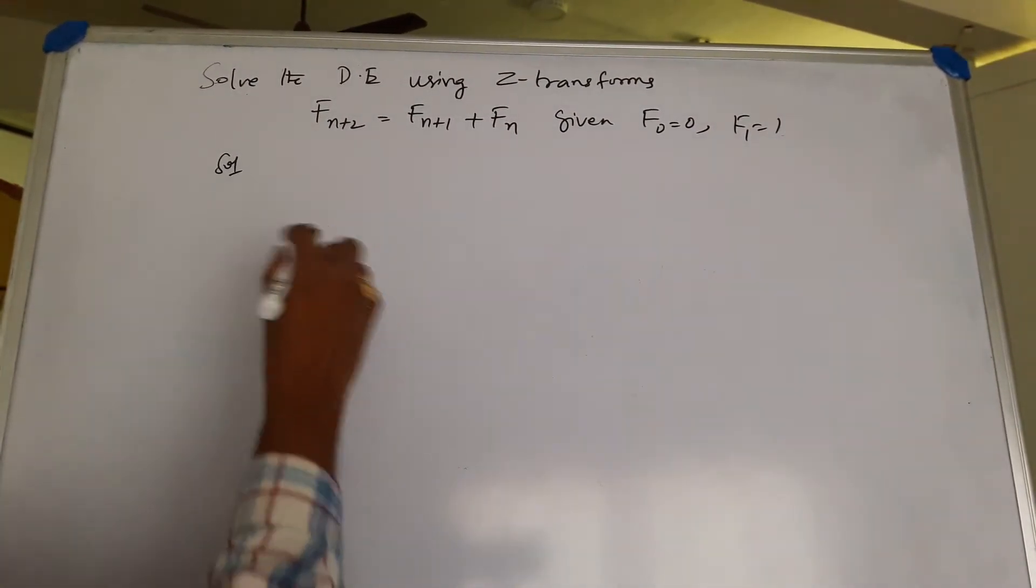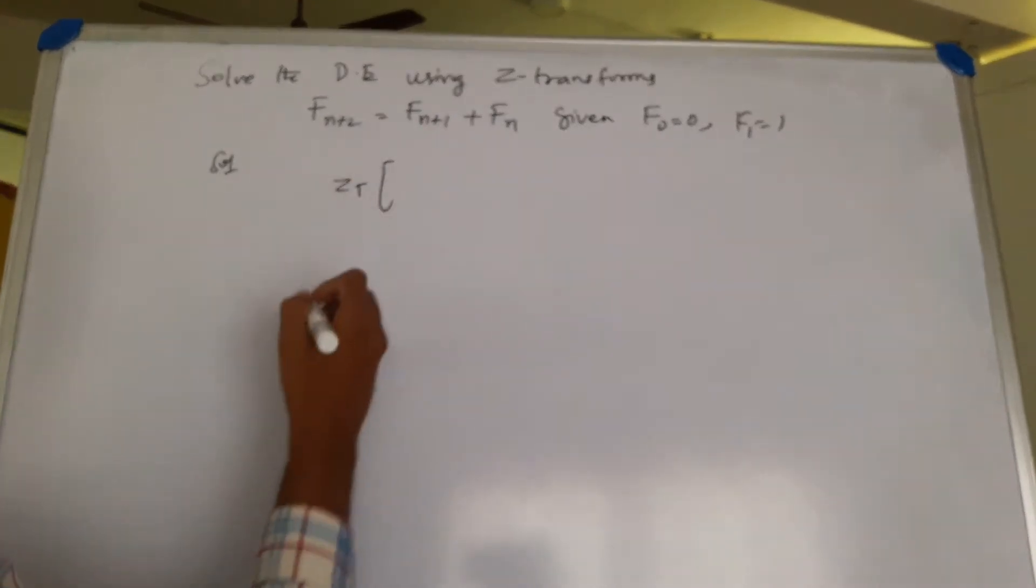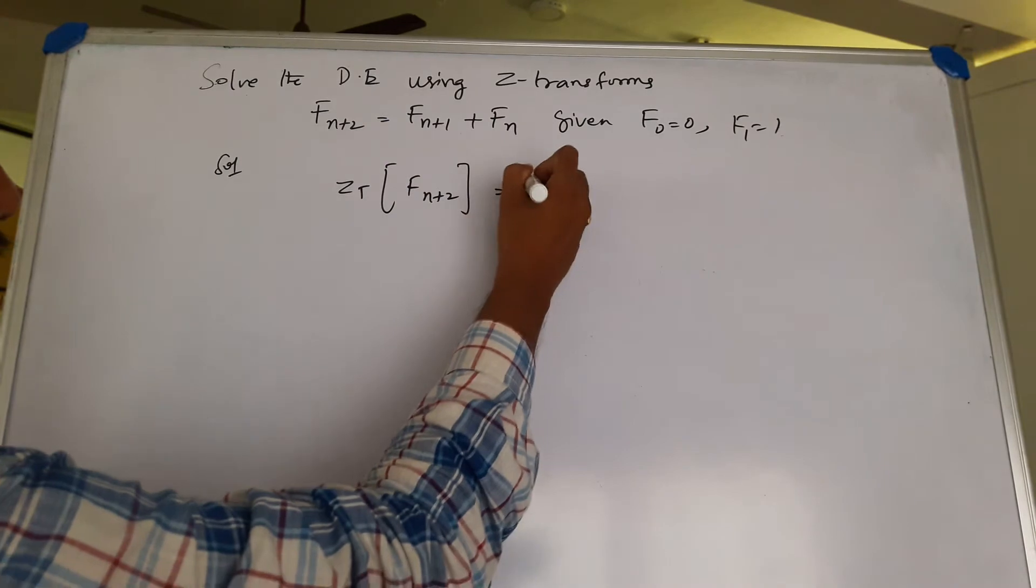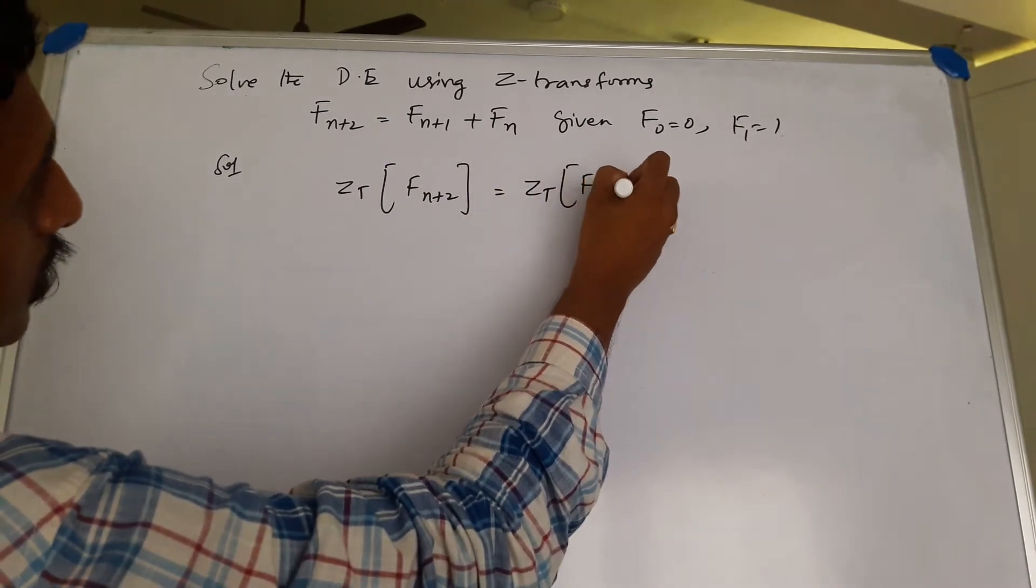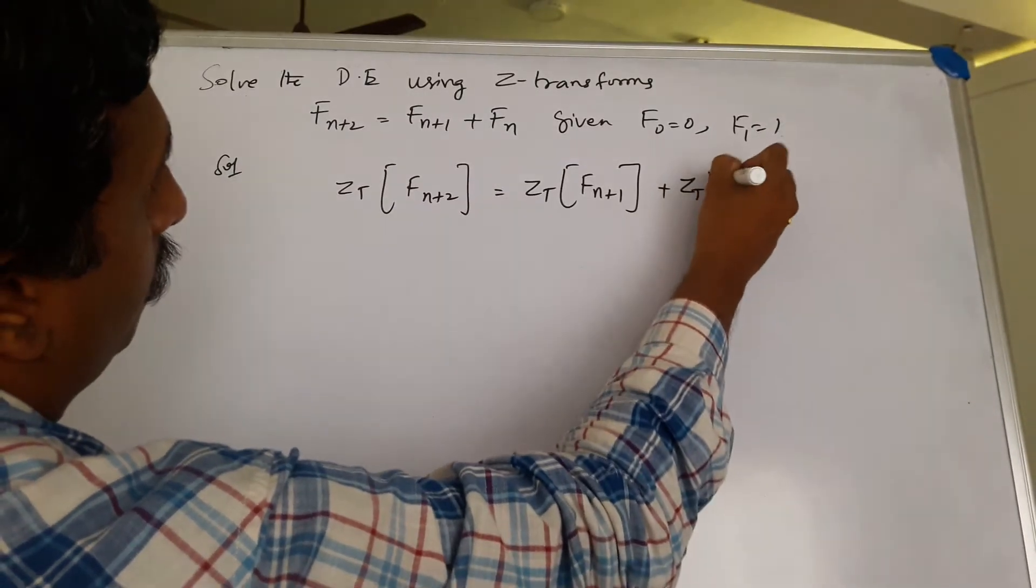Applying Z-transforms on both sides of the equation. So the transform of f_n+2, f_n+1, and f_n.